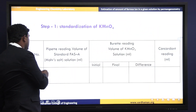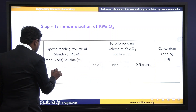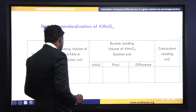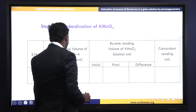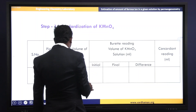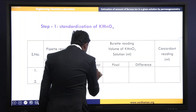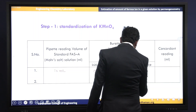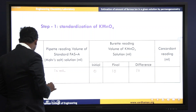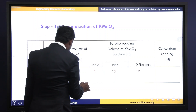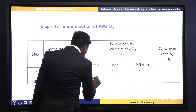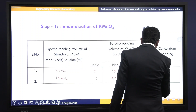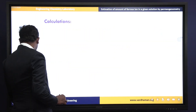We should draw the table. Volume of Mohr's salt A pipetted out is 10 ml. Initial burette reading is 0, final reading is 10 ml, difference is 10 ml. We repeat the titration to get concordant values. Second reading: initial is 10 ml, final is 20 ml, difference is 10 ml. The average value: 10 plus 10 divided by 2 equals 10 ml.